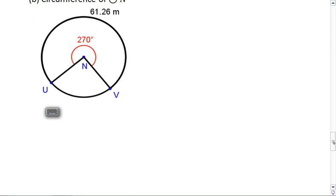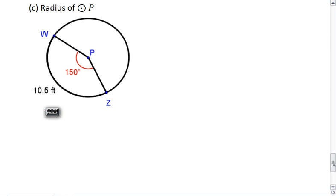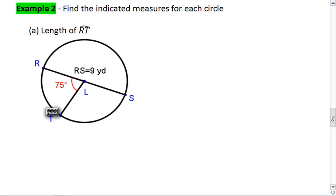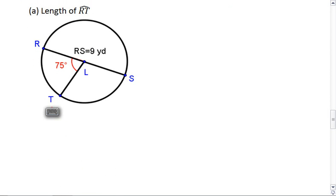So try these on your own first. Oh, we do have a part C. Find the radius of circle P, where you're given an arc length of 10.5 feet and an arc measure of 150 degrees. So try these on your own first and then resume when you're ready to check your solution.